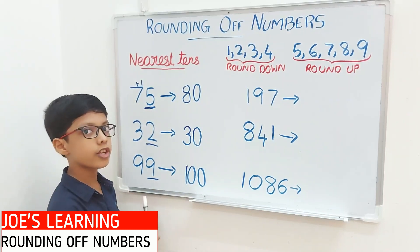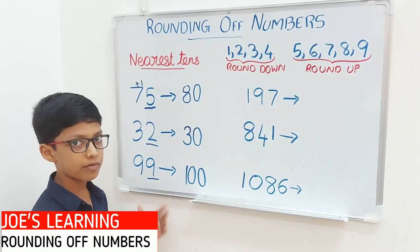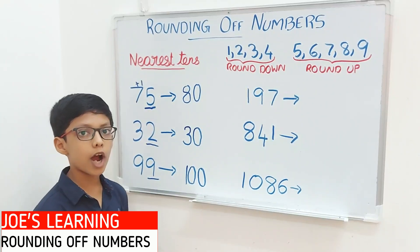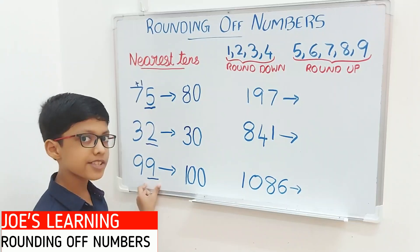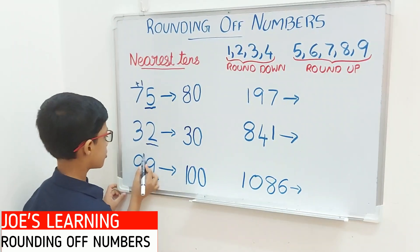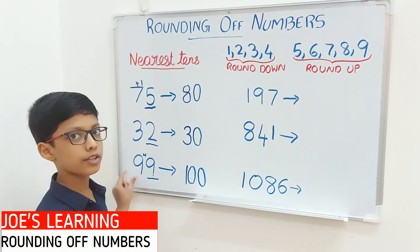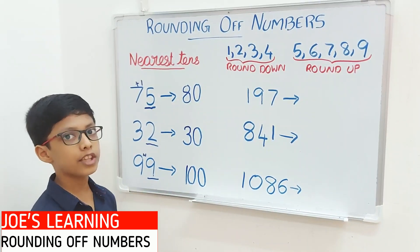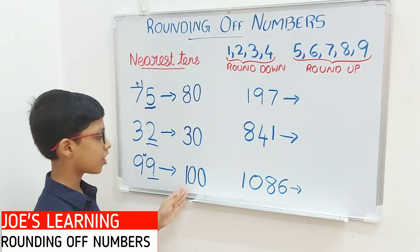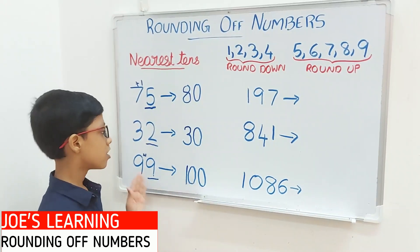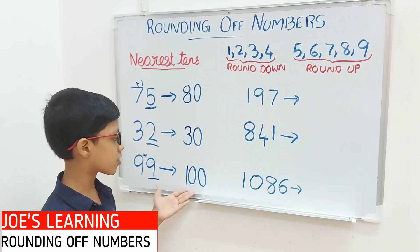Now let's try with 99. We need to look at the digit in the 1's place — 9 is greater than 5, so we need to round upwards. We put a 0 in the 1's place and add 1 to the 9 in the tens place. Adding 1 to 9 gives 10, so we carry over 1, resulting in 100. So 99 rounded off to the nearest tens equals 100.